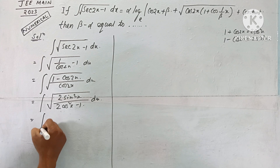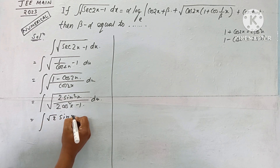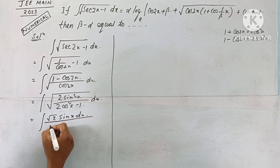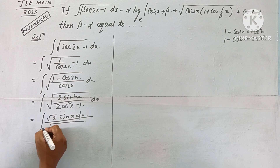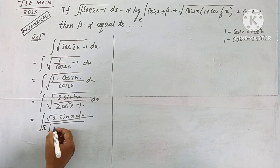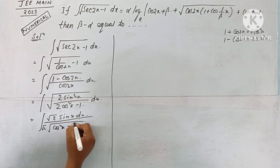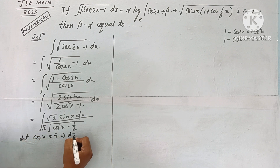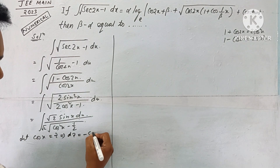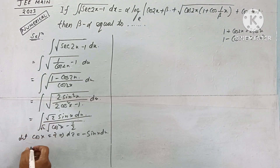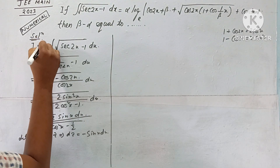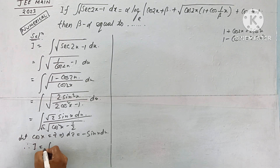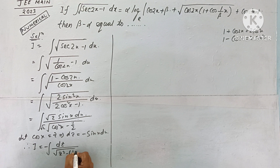So the integration becomes √(2sin²x / cos2x) dx, which simplifies to √2 · (sin x / √(cos2x)) dx. Removing √2 from outside, we have √2 · sin x / √(cos2x) dx, where cos2x = 2cos²x - 1. Let cos x = z, then dz = -sin x dx. Substituting, sin x dx = -dz, so I = ∫ -dz / √(z² - 1/2).